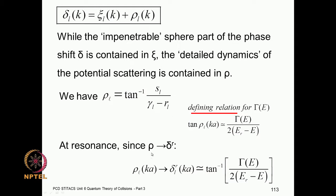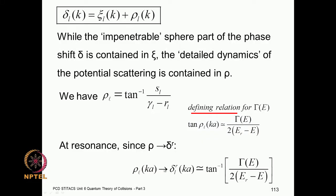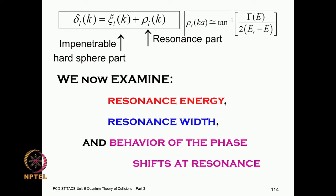At the resonance, the residual phase shift — other than the impenetrable hard sphere phase shift — is represented as delta^r (delta with a superscript r). At resonance, rho is given by delta^r = tan⁻¹(Gamma/2 · 1/(E_r − E)), by the definition of Gamma. We will now examine the resonance energy, resonance width, and the behavior of the phase shifts at the resonance.